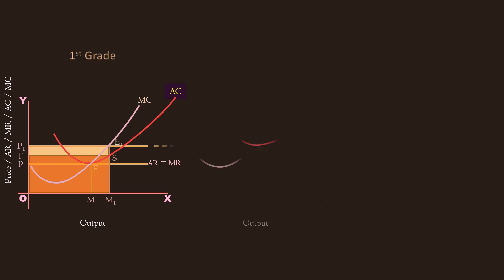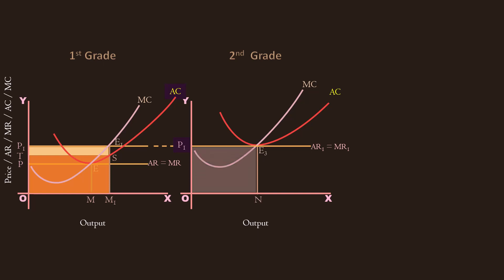The second grade land is also brought under cultivation because the price is high enough to cover the cost of cultivation. It produces N units of output. Its cost of cultivation is O P1 E3 N. Its revenue is also O P1 E3 N. Since cost is just equal to revenue, it earns no surplus and hence no rent. Second grade land is marginal land. First grade land is intramarginal land. Intramarginal land earns rent.